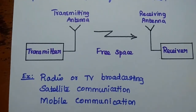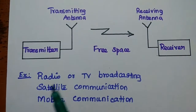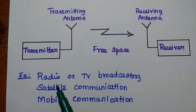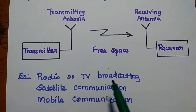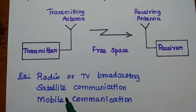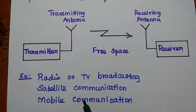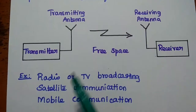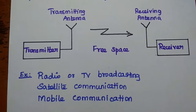The best examples of wireless communication are radio or TV broadcasting, satellite communication, and mobile communication — all are forms of wireless communication.